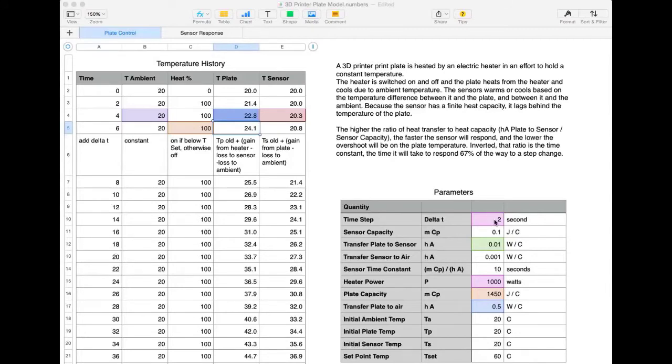These input parameters are important to determining that formula. Time step, how far forward we're going in time, how well energy is transferred from the plate to the sensor, and how much power is coming from the heater, what the capacity of the plate is, how much energy it takes to heat it up by one degree Celsius, and finally how readily heat is transferred from the plate to the air.